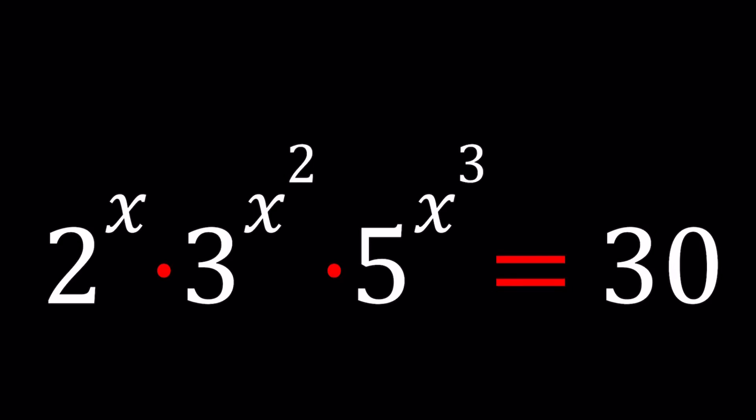Hello everyone. In this video we're going to be solving a very exponential equation. We have 2 to the power of x times 3 to the power of x squared times 5 to the power of x cubed and that's equal to 30. And we're going to be solving for x.